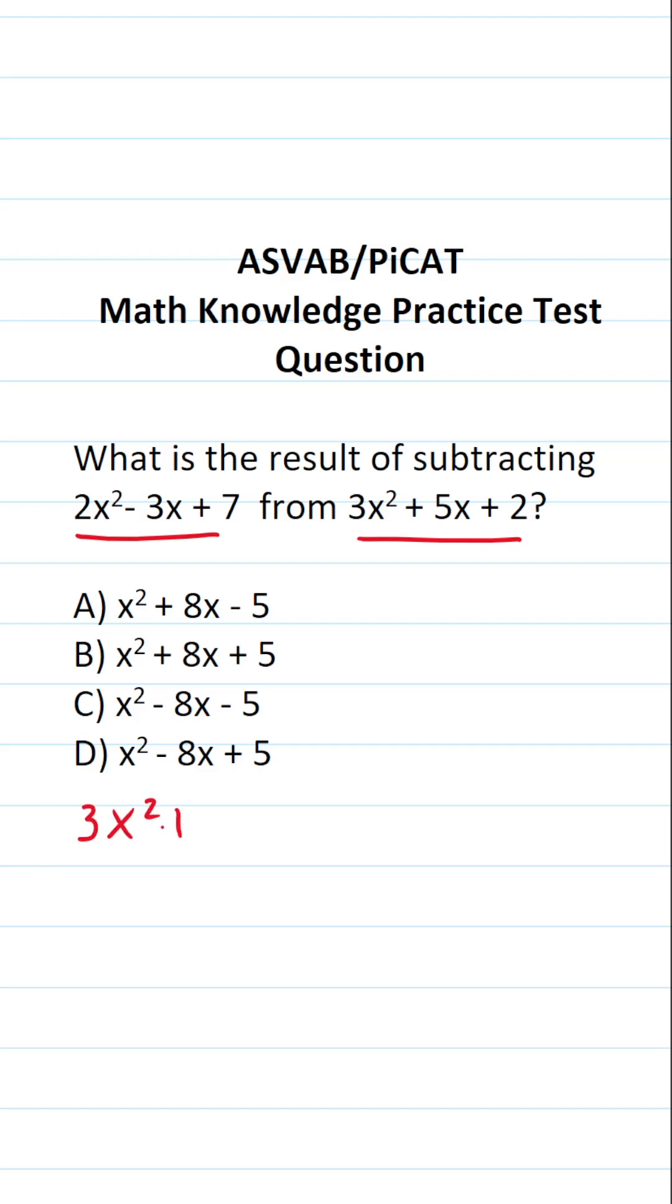3x² + 5x + 2. From that, we're subtracting all the terms in the second polynomial. So we're going to need a set of parentheses. It's going to be 2x² - 3x + 7.